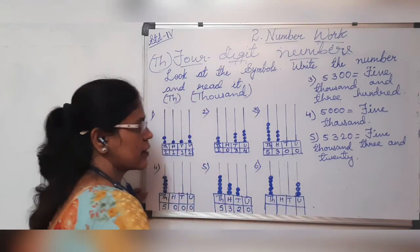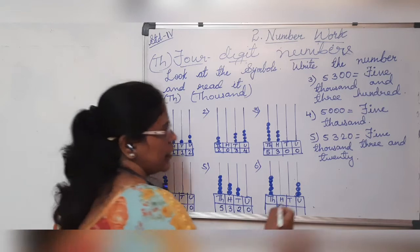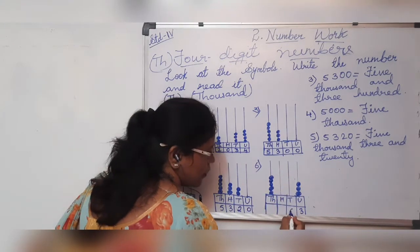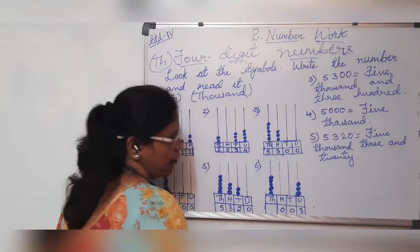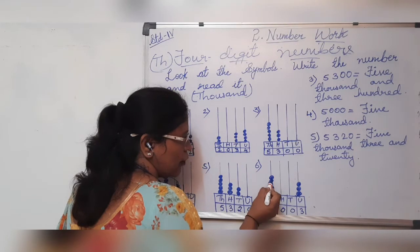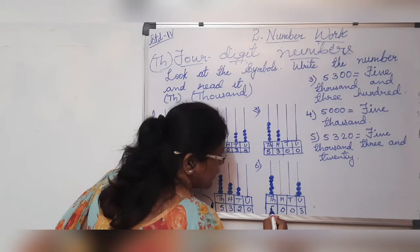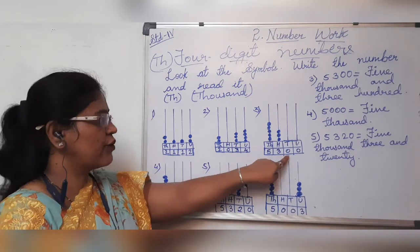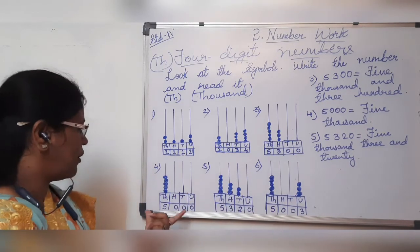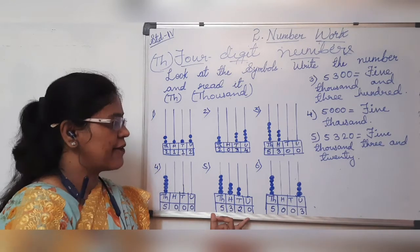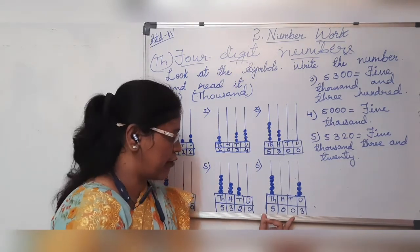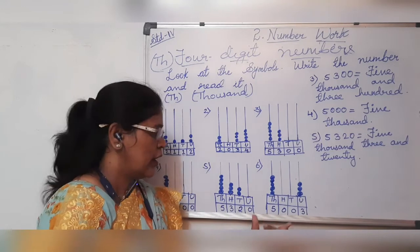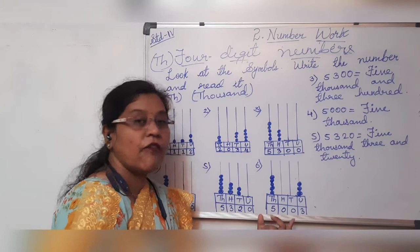Now the sixth and last sum. Units place — how many beads? 1, 2, 3 — three beads. Tens place — no beads, so 0. Hundreds place — no beads, so 0. Thousands place — 1, 2, 3, 4, 5 — five beads. Now read the number. See the difference: units place three, tens place zero, hundreds place zero, thousands place five. So it is 5,003 — five thousand and three. Hundreds place is zero, tens place is zero.